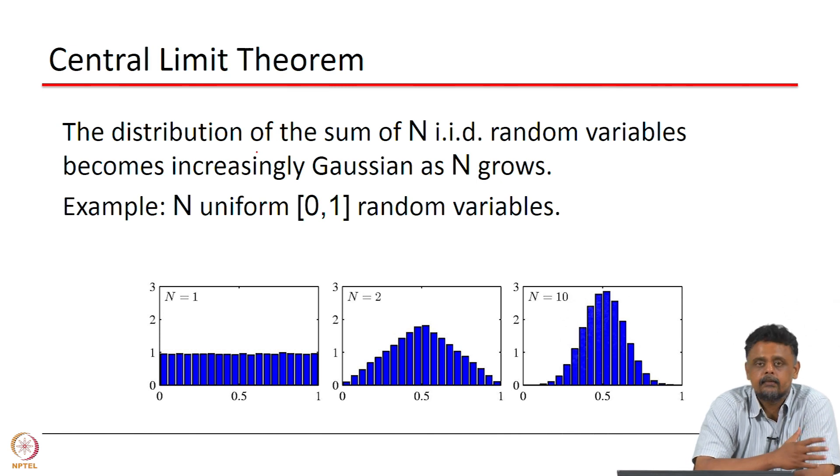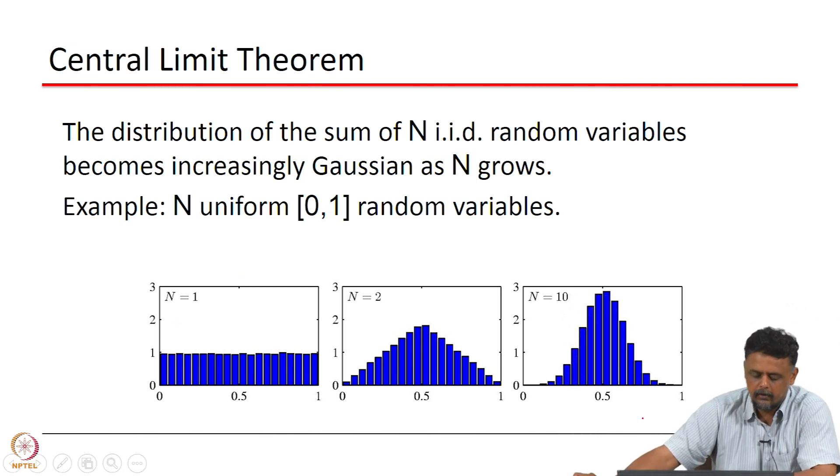As N becomes very large. So if you look at these plots, the first plot corresponds to N equal to 1. Remember that we are considering the sum of N independent and identically distributed random variables. In this case N equal to 1, there is no summation here. We are just drawing numbers from a uniform random distribution between 0 and 1.